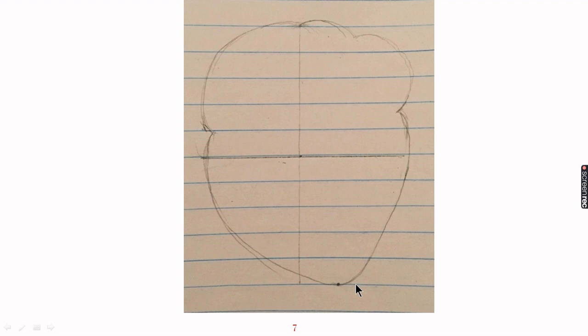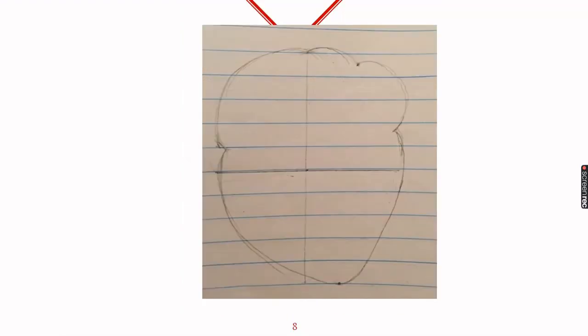One important thing: the side which is towards our right hand — our right-hand side — will be the left side of the heart, and vice versa. After completing the outline, we will draw the partition wall between the right and the left side of the heart.